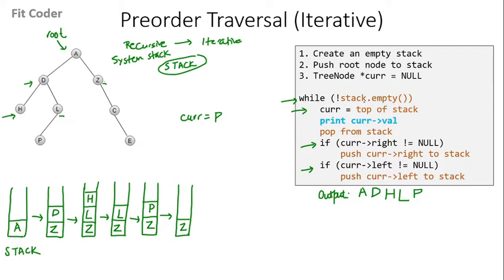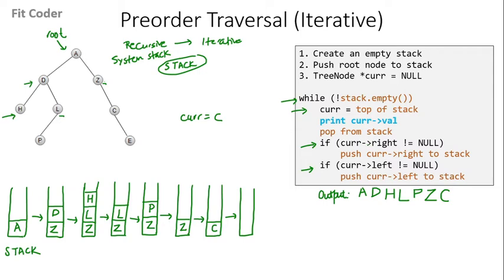We again check the while condition — stack is not empty. We initialize current with top of the stack, which is Z. We print Z and pop from the stack — stack is now empty. We check right of Z: right of Z is C, so we push C to the stack. We check left of Z: left of Z is null, so that condition is false. We come back to the while condition — stack is not empty. We set current to top of the stack, which is C. We print C and pop from the stack. We check right of C: right of C is E, so we push E to the stack. Left of C is null.